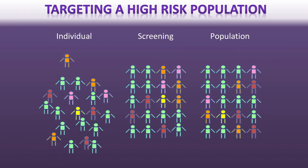When thinking about doing this in a public health way, there are three different possibilities for dealing with populations: the individual level, the population level, and the screening level. Imagine a population where people who are green are unlikely to develop a disease, people in pink or orange might be at greater risk, and one person in yellow is someone who is actually going to develop a disease. These colors roughly represent different levels of disease risk within the population.